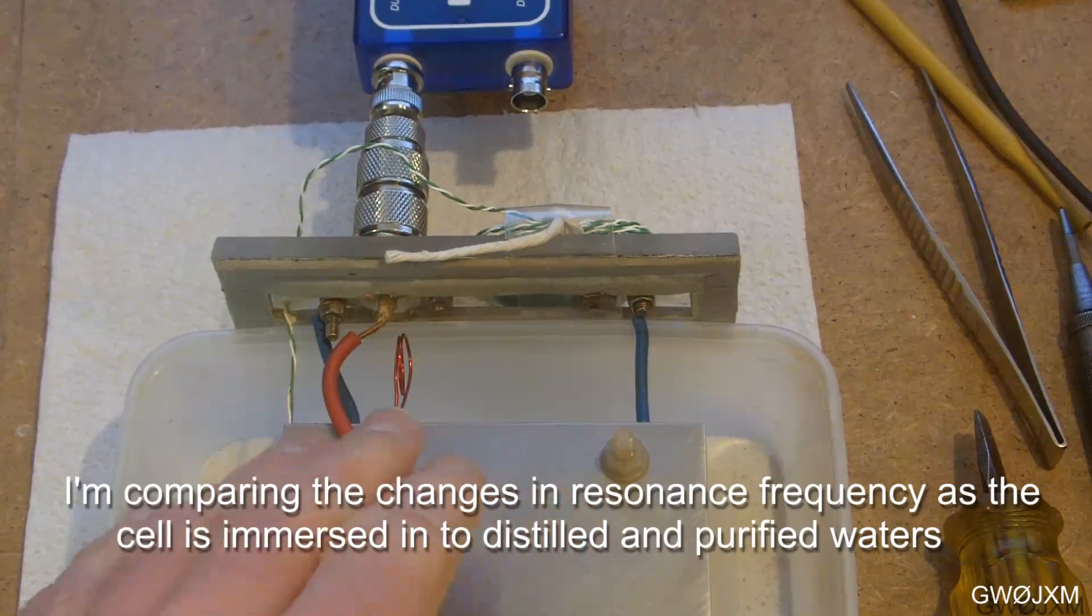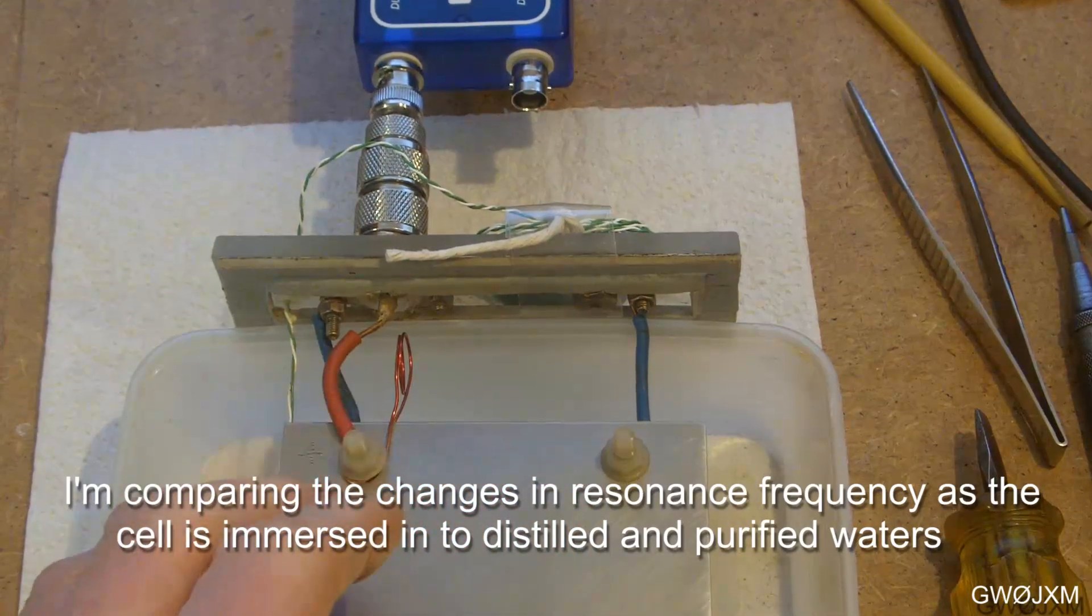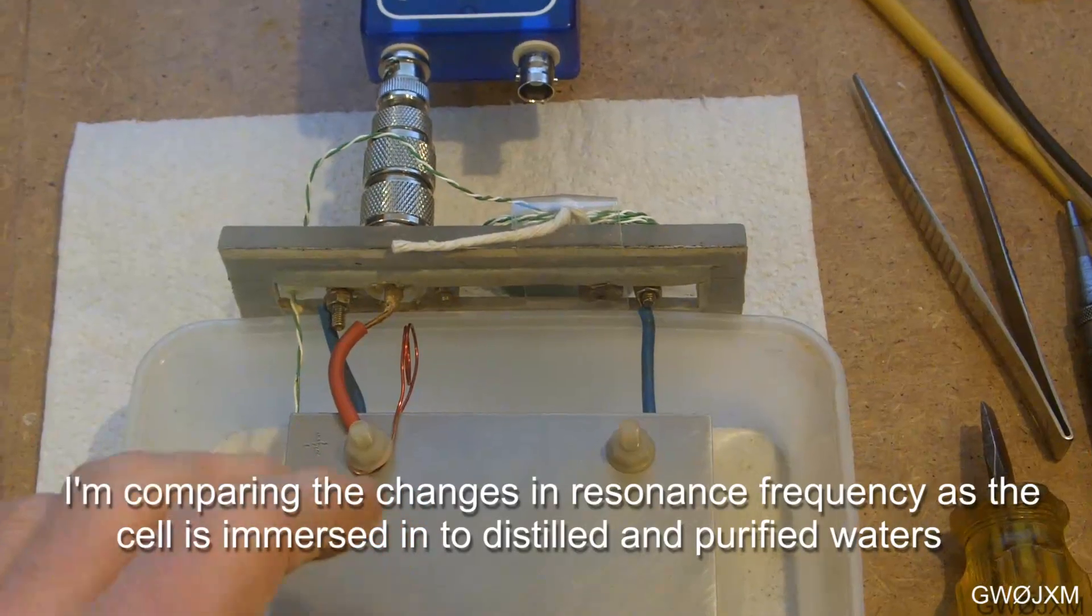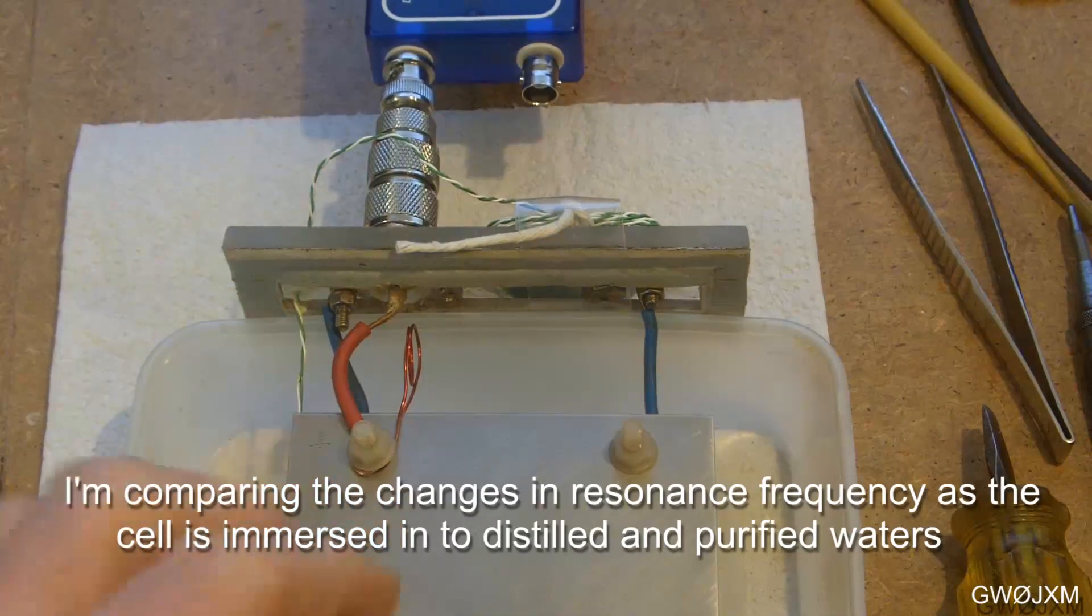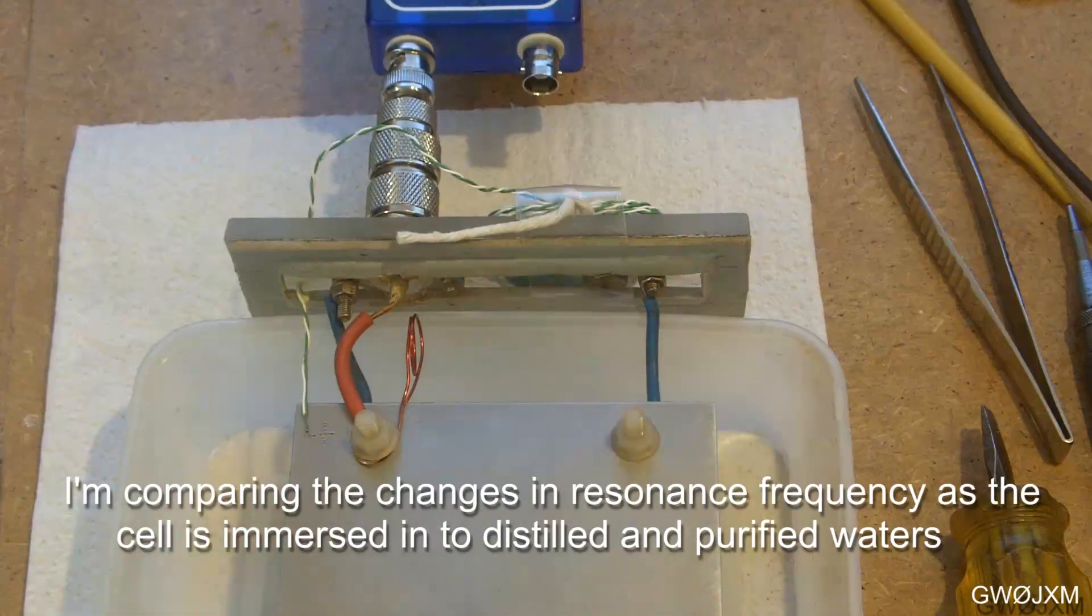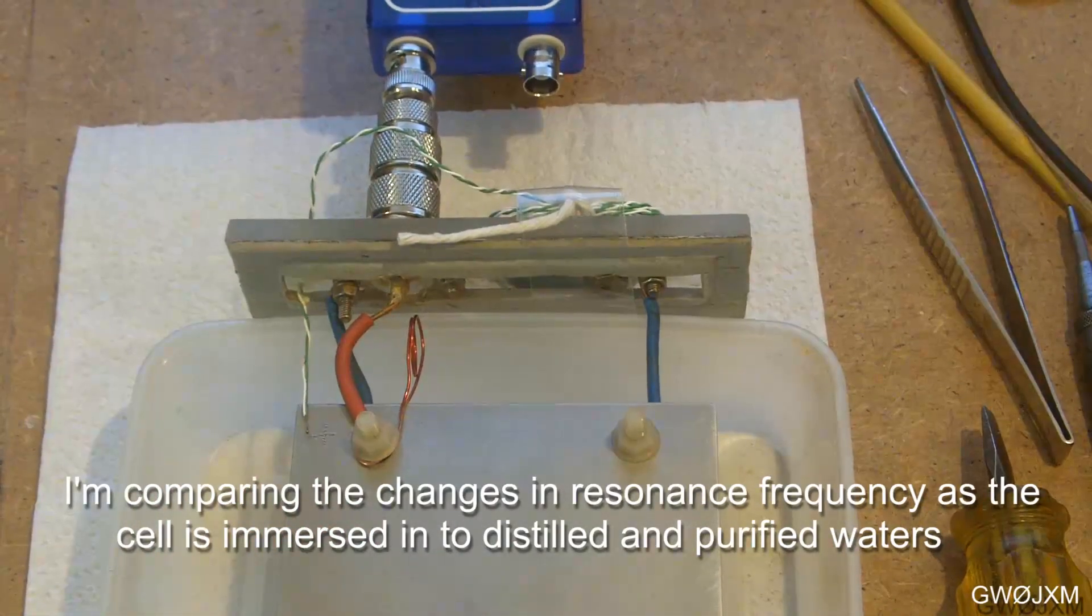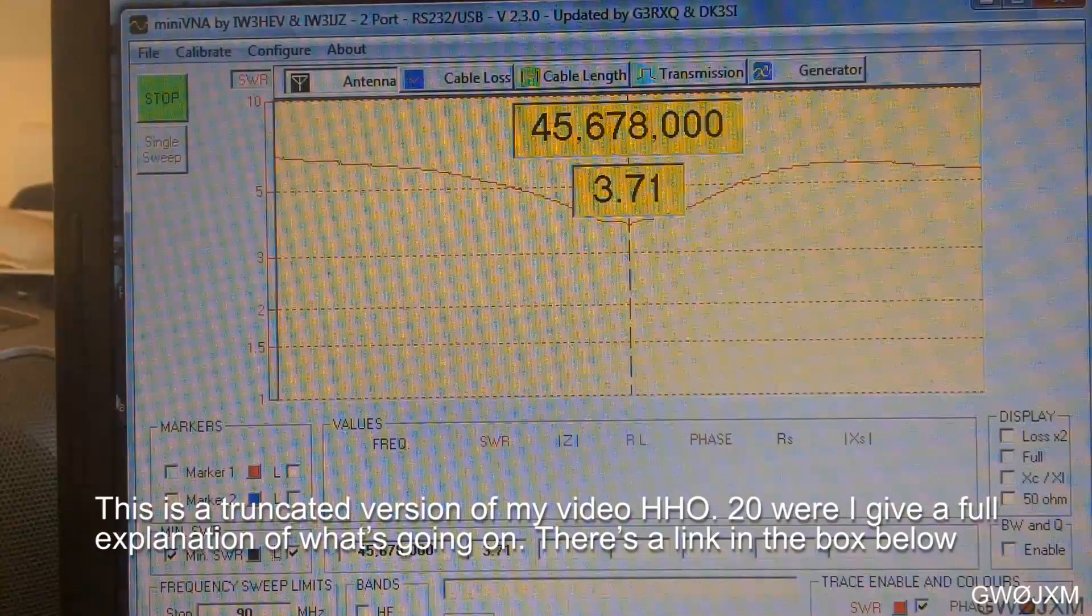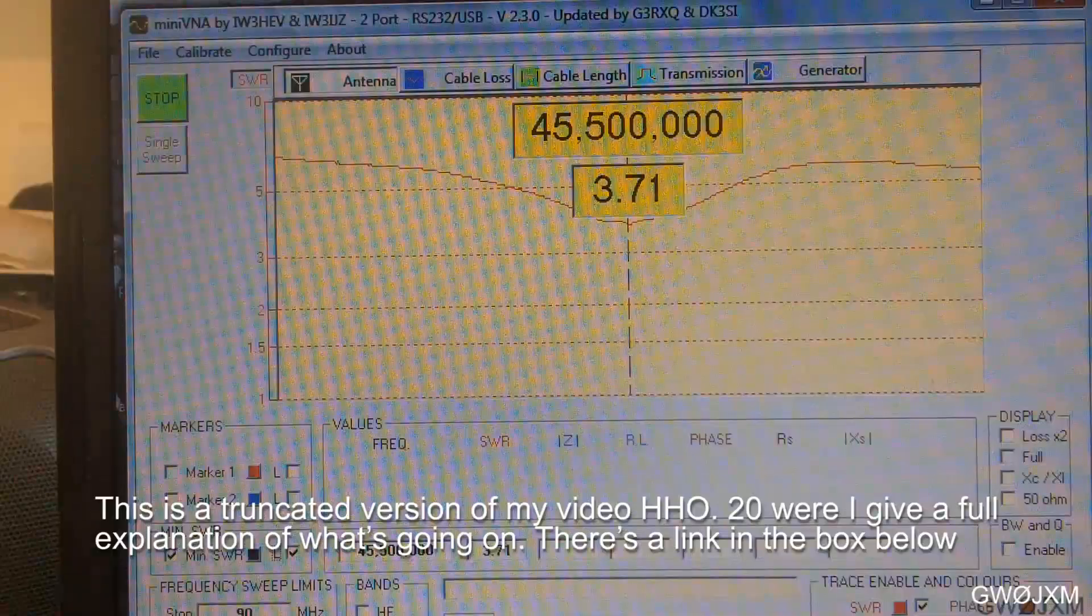I've got the cell cleaned up, dried, washed and dried. I've washed it with purified water and I've got the coil on again and we'll just verify the frequency. So it's 45 megahertz which is about where we were before.